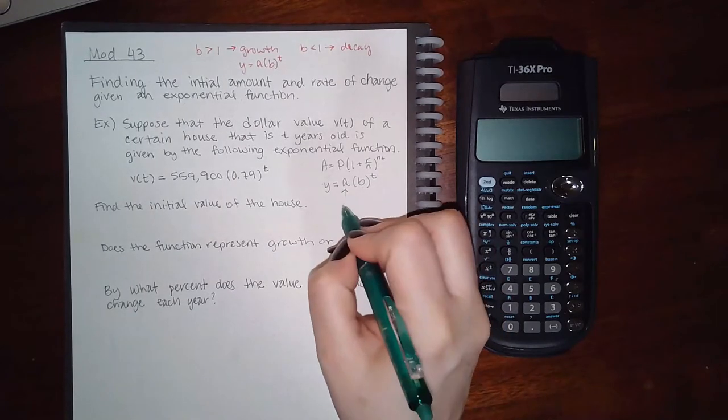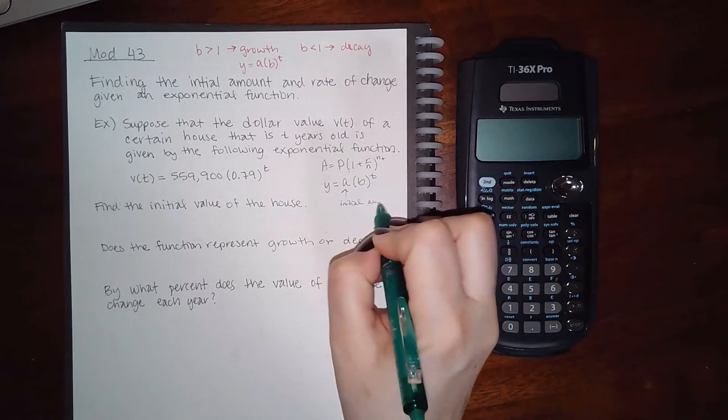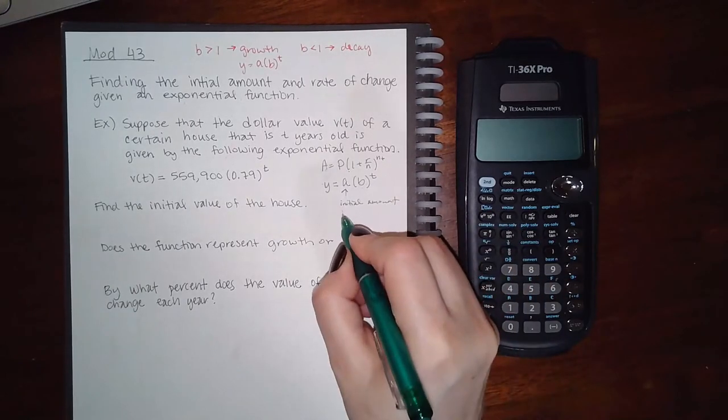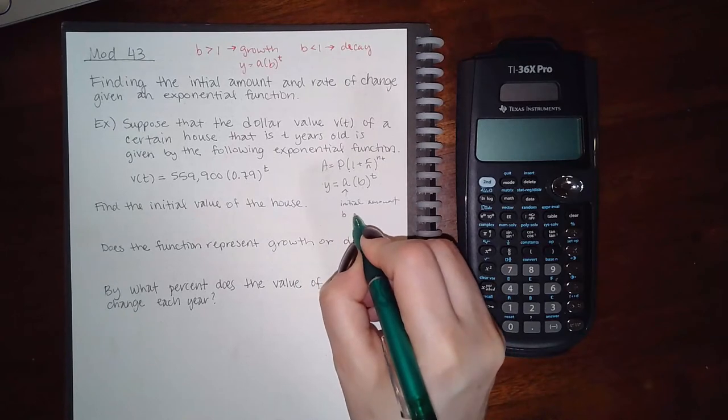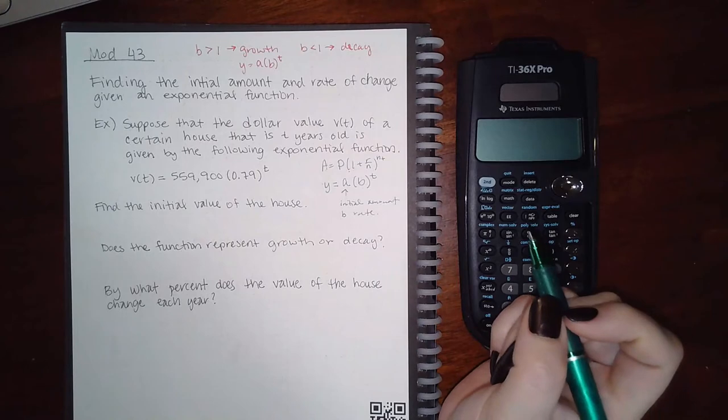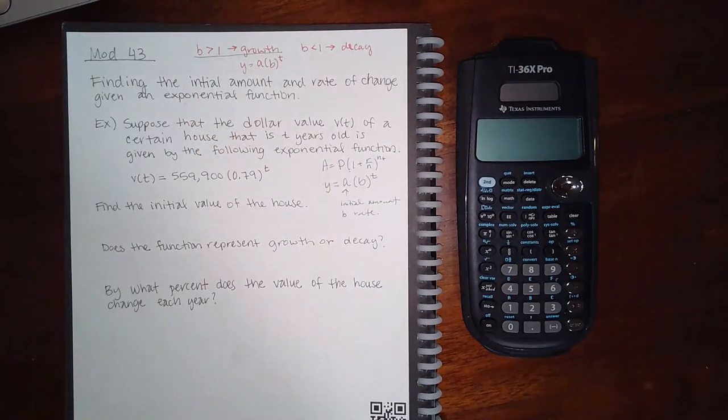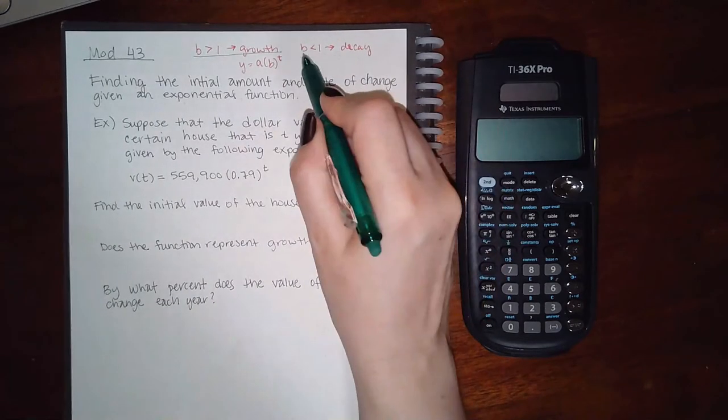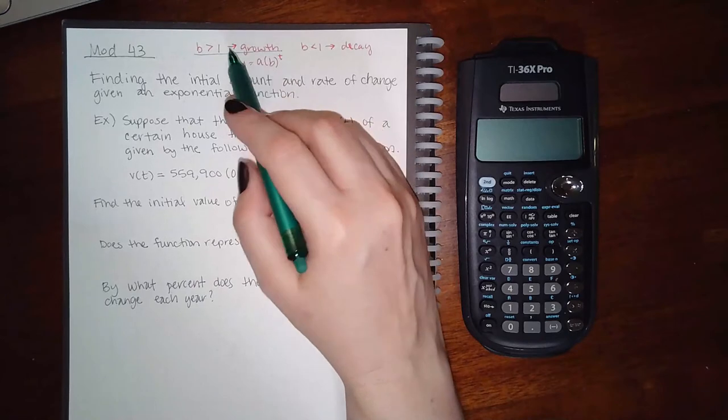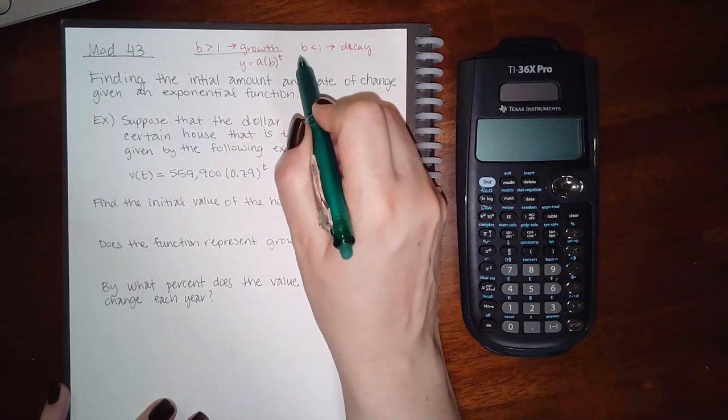So this is going to be your initial amount. And b is going to be your rate. However, there's two things you need to know: one is that if b is greater than one, it's a growth rate. If it's less than one, then it's a decay.